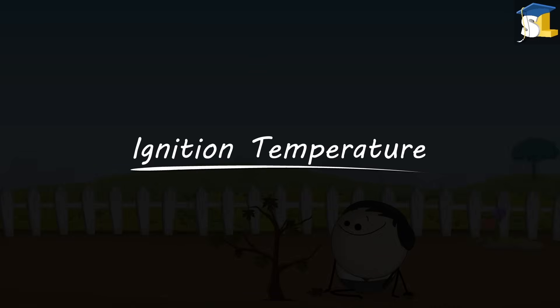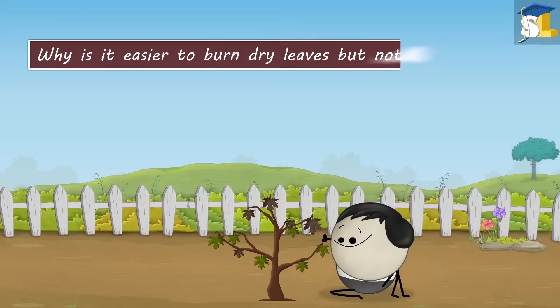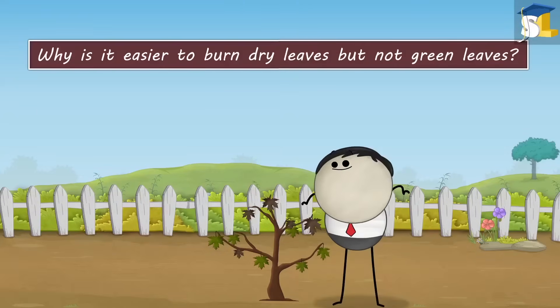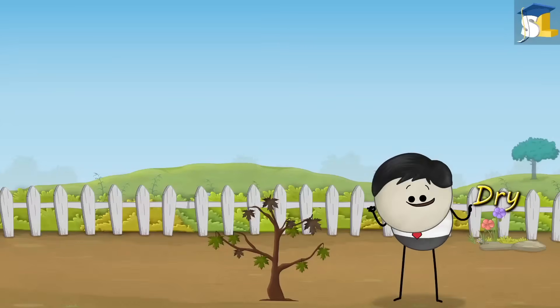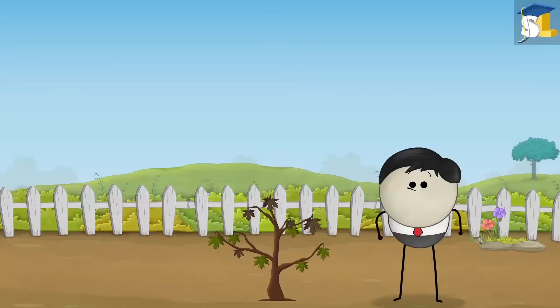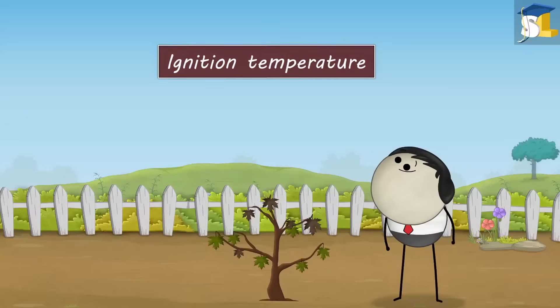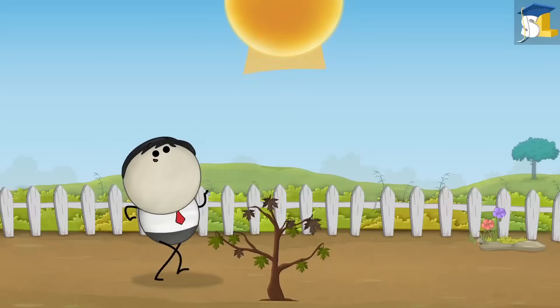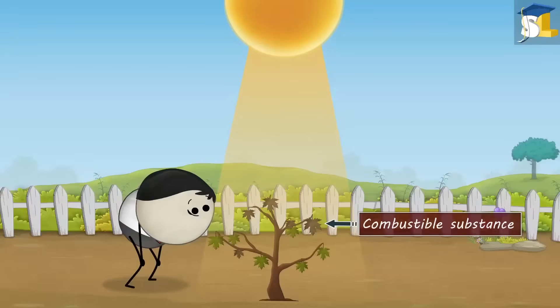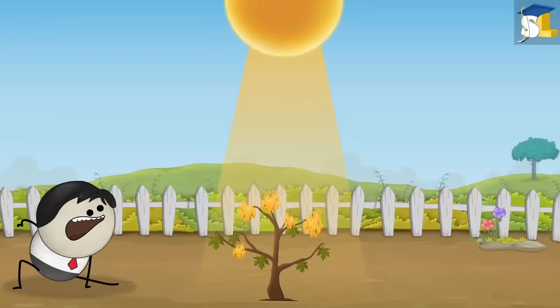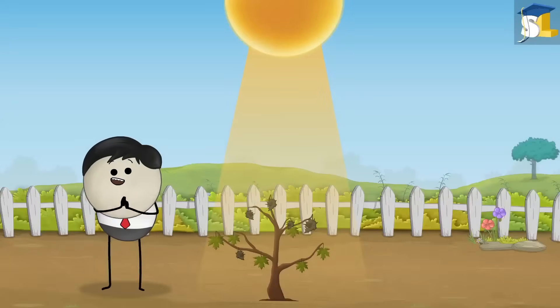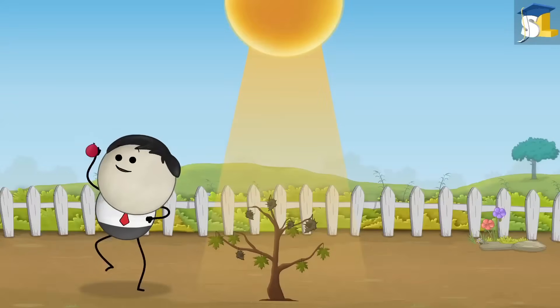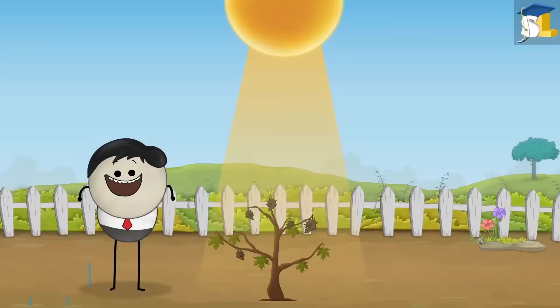Ignition temperature. Why is it easier to burn dry leaves but not green leaves? Because it is easier to spell dry than green. No. It is because of ignition temperature. Ignition temperature is the lowest temperature at which a combustible substance starts burning. Now, green leaves have moisture or water in them. Wow. So, I can use them as water balloons? Please listen.